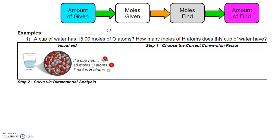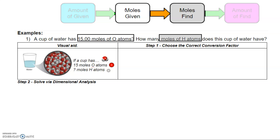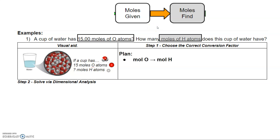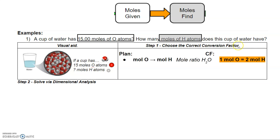Let's identify our given and find. We're given 15 moles of oxygen atoms, and we're asked to find the number of moles of hydrogen atoms. Our given is in moles and our find is in moles, so we really need to do just that middle step — going from moles of given to moles of find. Our plan is to go from moles of oxygen to moles of hydrogen using the mole ratio based on the chemical formula H₂O. In H₂O, there is one oxygen atom to two hydrogen atoms, which means one mole of oxygen corresponds to two moles of hydrogen. That is our mole ratio.